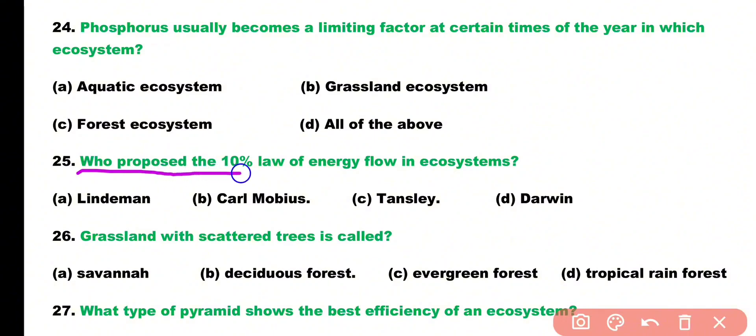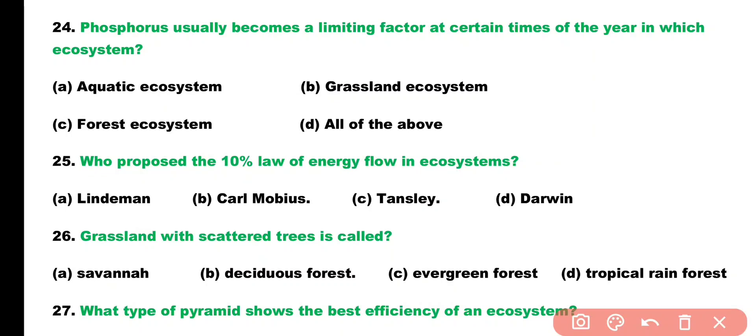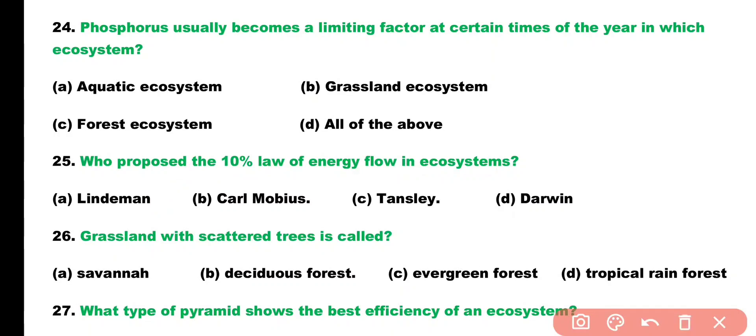Question number twenty-five. Who proposed the 10% law of energy flow in an ecosystem? Options: Lindemann, Carl Mobius, Tensley, or Darwin? Correct answer is option A. The 10% law of energy flow in an ecosystem was proposed by Lindemann.